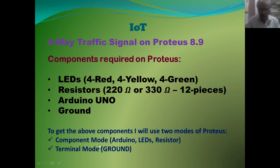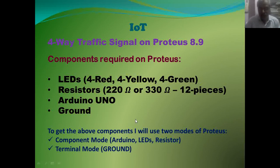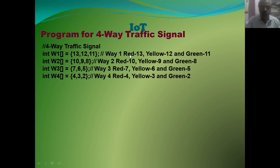All these components are available on Proteus 8.9. For this, I have used four different arrays: Way1, Way2, Way3, and Way4, corresponding to roots 1 through 4. The size of each array is 3. All first pins in each array are used for red LEDs, second pins for yellow LEDs, and third pins for green LEDs in each row.